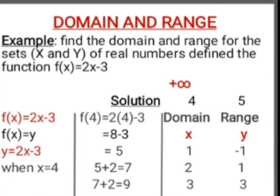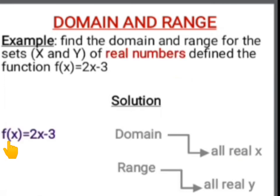This pattern continues towards positive infinity, provided the domain is increasing towards positive infinity as well. If the domain starts decreasing, the range will also decrease towards negative infinity. You can verify this by putting negative numbers for x and observing what happens to y. In conclusion, the domain of f(x) = 2x - 3 is the set of all real x, and the range is the set of all real y.